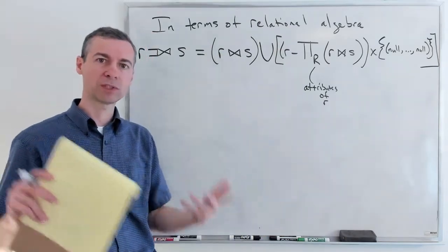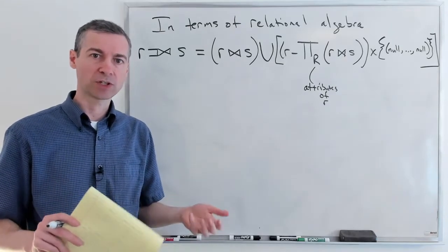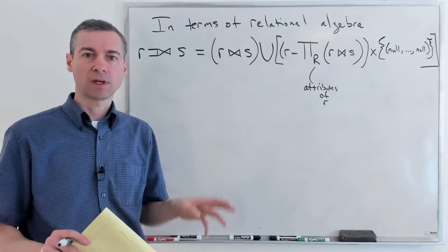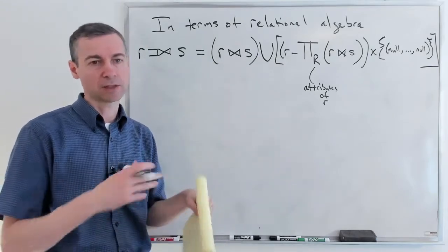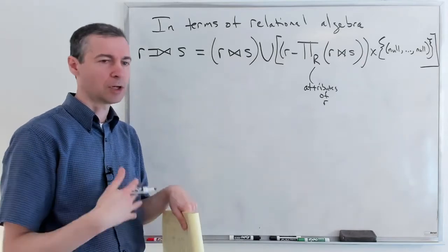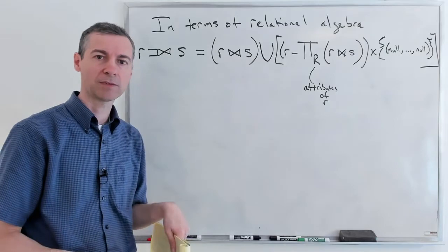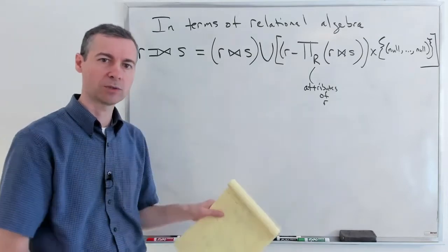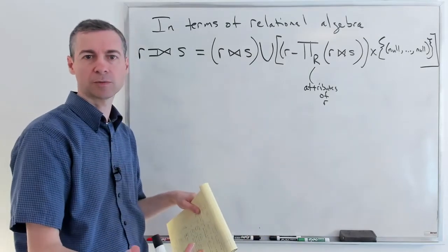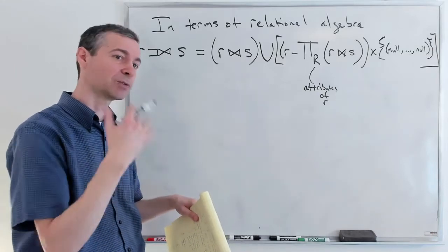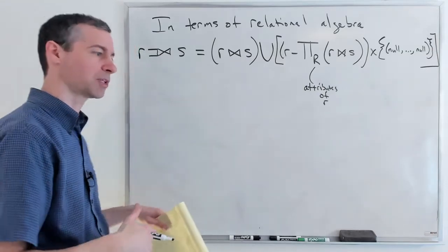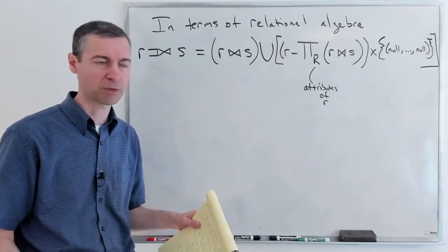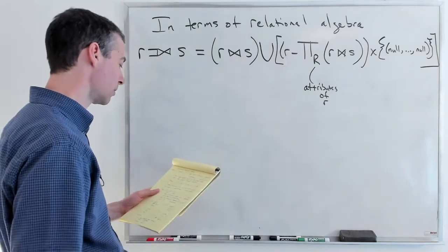The real utility of the left outer join is when you want your result set to have everything from one of your tables at least — give me nulls for the other columns if there's no match, but I can still have all my customers, all my users. I might need that for some computation over all users or all students.